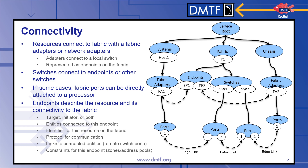Resources are connected to the fabric via fabric adapters or network adapters. Adapters connect to a switch via a port on the adapter. Switches can connect to endpoints or to other switches. Endpoints describe the resource and its connectivity to that fabric — for example, whether the resource is a target, an initiator, or both. Endpoints also describe an identifier for that resource on the fabric, the communication protocol, and links to the connected entities and constraints for that specific endpoint.